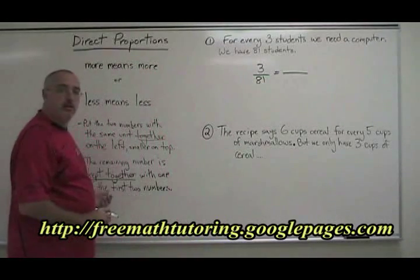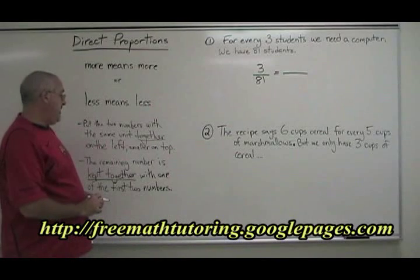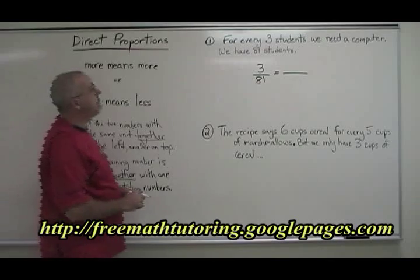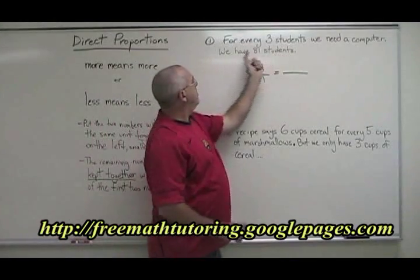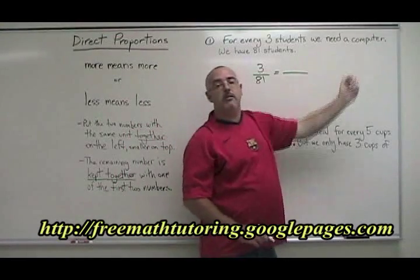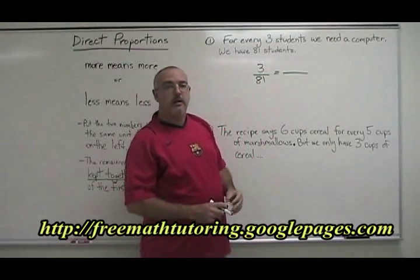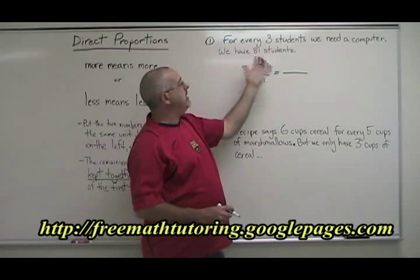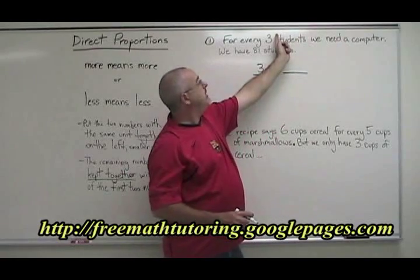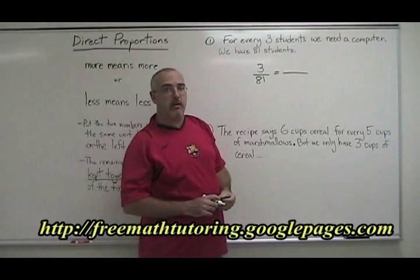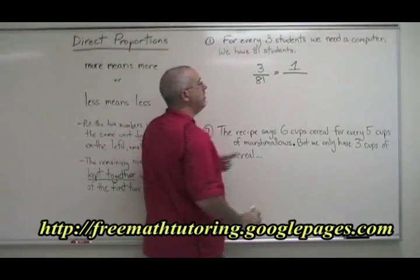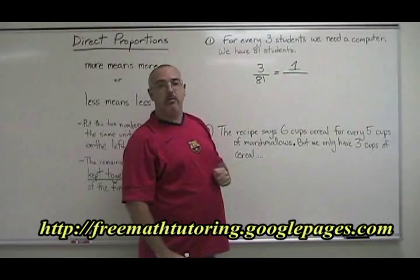Then we put an equal sign and a line for our other fraction. The remaining number is kept together with one of the first two numbers. In this problem you have to realize that a computer means one computer, so the other number besides the three and the 81 is one. That one computer goes with three students based on the logic of the problem, so we put it together with the three — on top with the three.